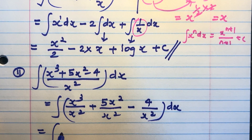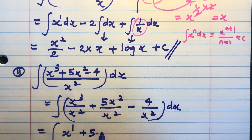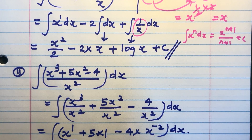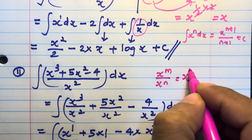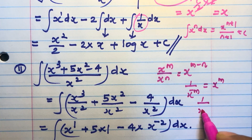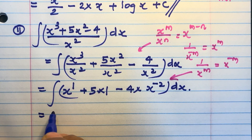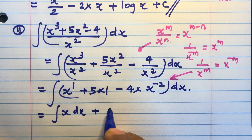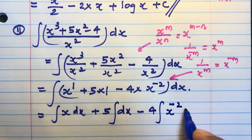Applying the exponential law x^m / x^n = x^(m−n): x^(3−2) = x^1, plus 5·x^(2−2) = 5·x^0 = 5·1, minus 4·x^(−2) dx. We applied the law 1/x^m = x^(−m). Taking separate integrals: integral x dx + 5 integral dx − 4 integral x^(−2) dx.